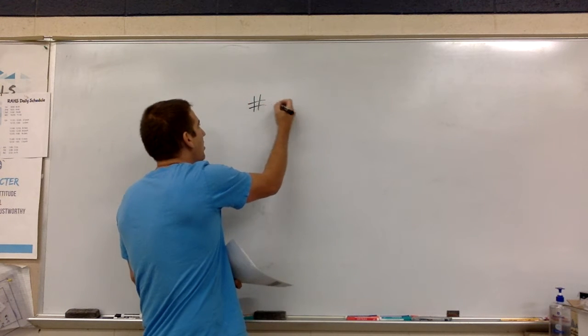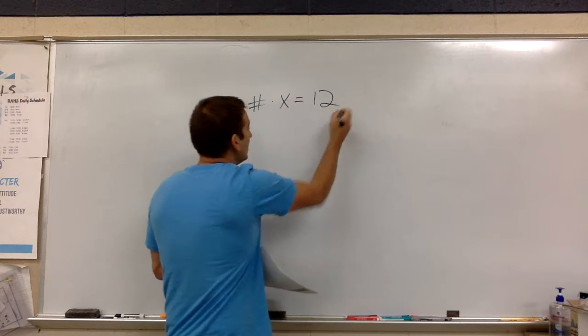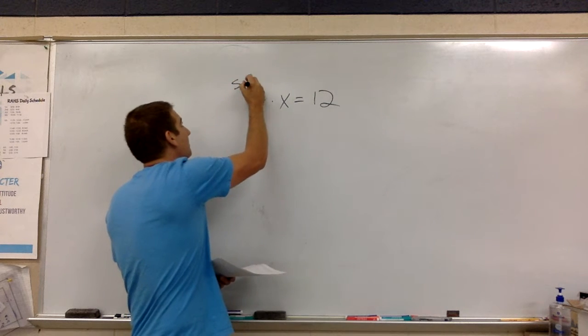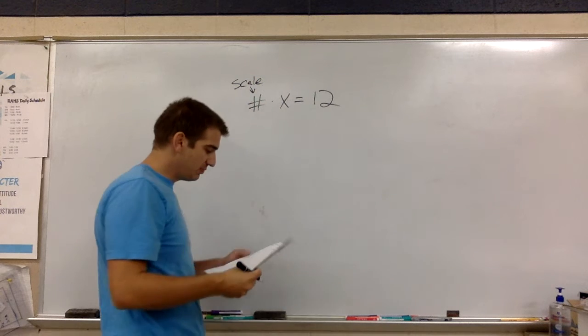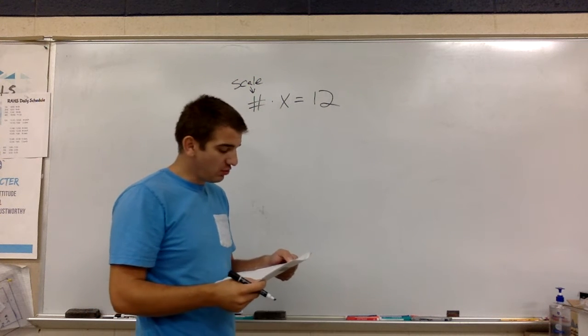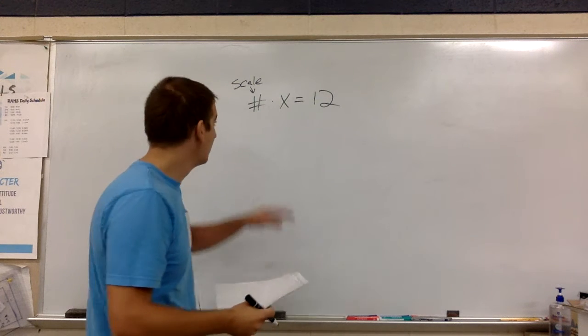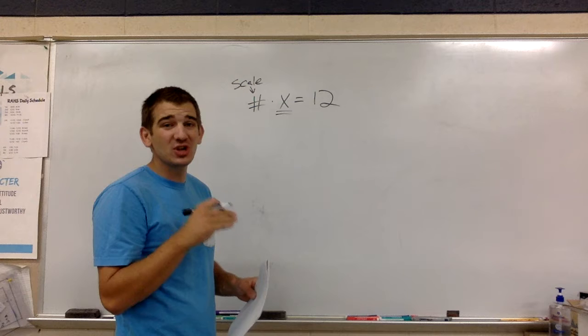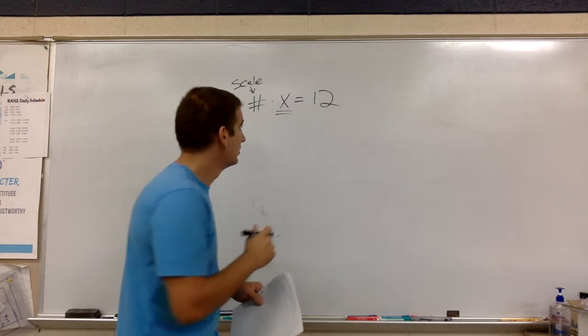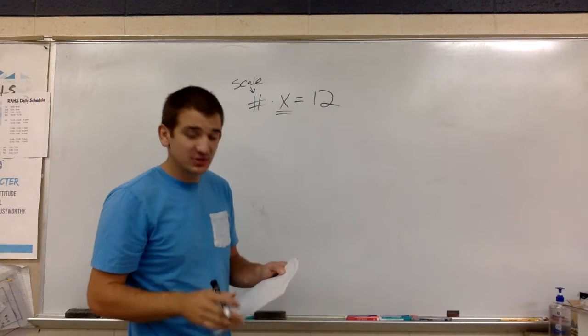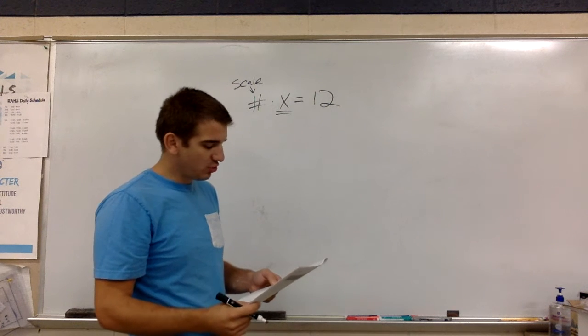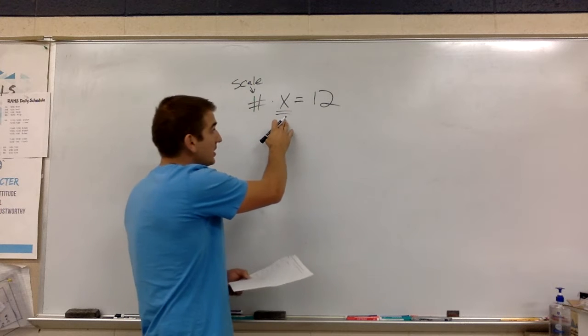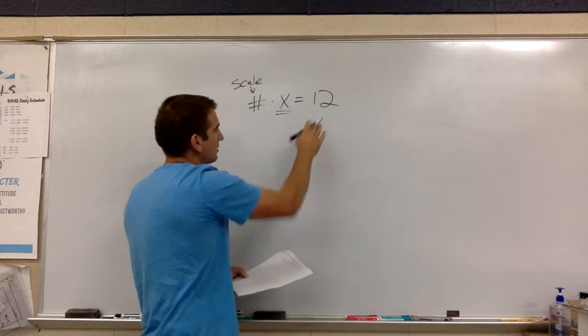We got our number times x equals 12. So the number is our scale. So that would be three inches is a scale, one and one half is a scale, one inch is a scale, three quarters is a scale. That's the number we would plug in for number. The x is our unknown, that is our answer. When we solve for x, we have figured this out. And 12 is in reference to 12 inches and one foot. So we have our scale times our answer essentially is equal to one foot. So one quarter times x equals one foot.